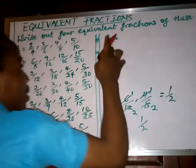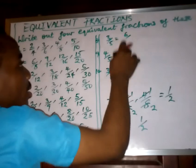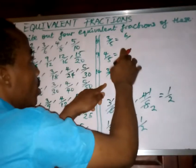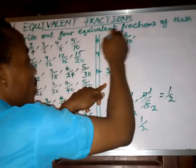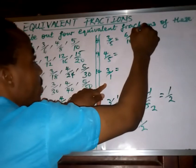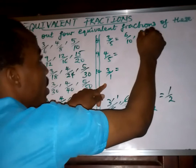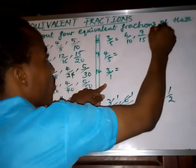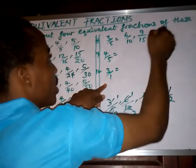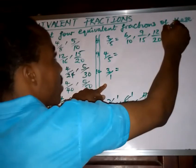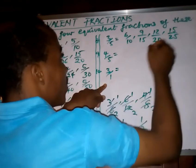For this side — 3 over 5: multiply by 2 — 2 times 3 is 6, 2 times 5 is 10. Multiply by 3 — 3 times 3 is 9, 3 times 5 is 15. Multiply by 4 — 4 times 3 is 12, 4 times 5 is 20. Multiply by 5 — 5 times 3 is 15, 5 times 5 is 25.